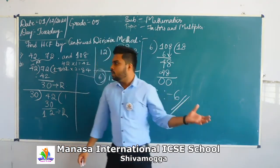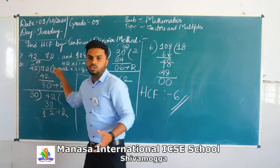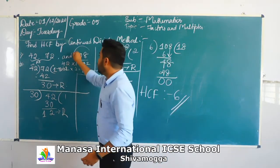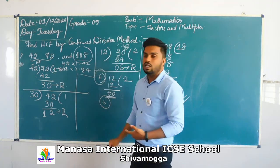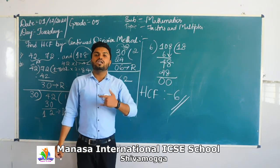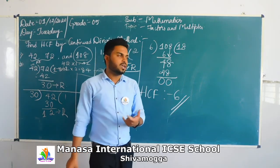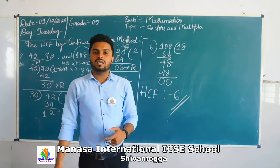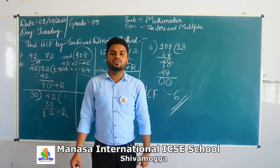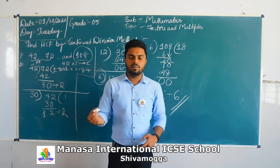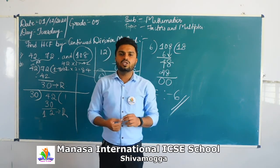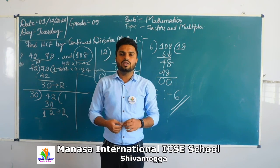Please understand this method, students. First we divide the first two terms using the continued division method. Then we take that final divisor and divide it into the third term. If we get no remainder, then that divisor is your HCF. Please watch the video 2 to 3 times if needed, or you can contact me and I can clear your doubts. We will continue with the next interesting concept in the next video. Till then, take care.